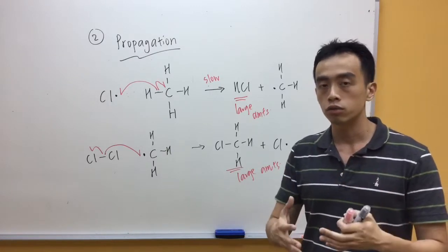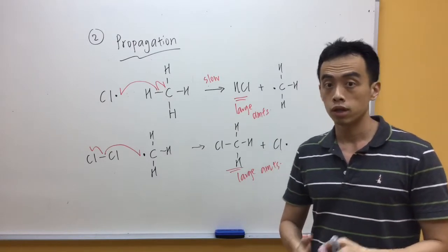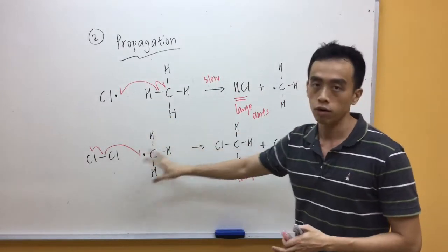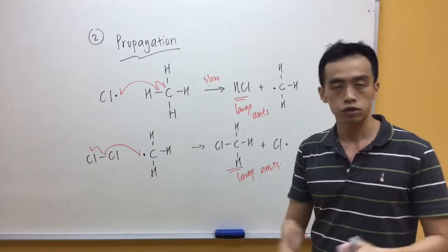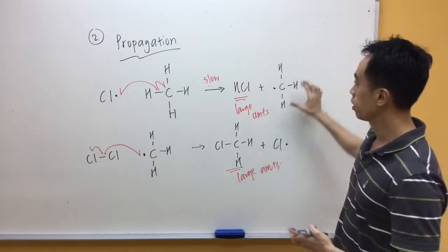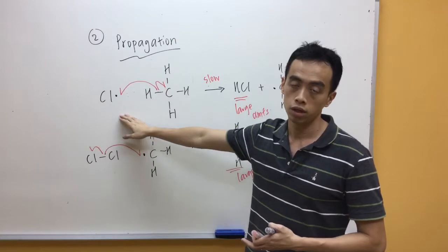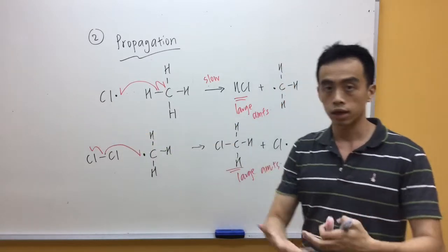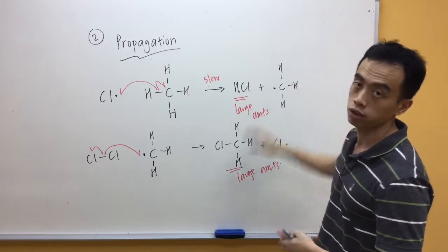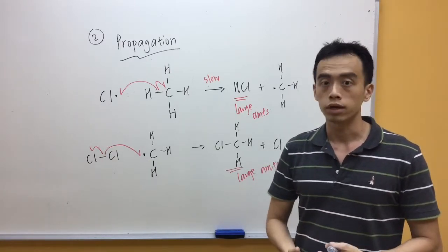So the radicals that we choose to use in our termination step is actually very simple. I just choose any two radicals I form in my propagation step. And I just combine them together. So what I can do is I can react CH3 radical with a Cl radical. That will be the first step we will write down. Then the second step will be CH3 with another CH3 radical. Which is the second termination step that I will write down.